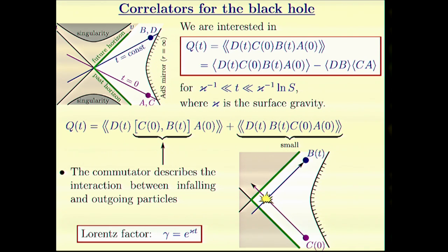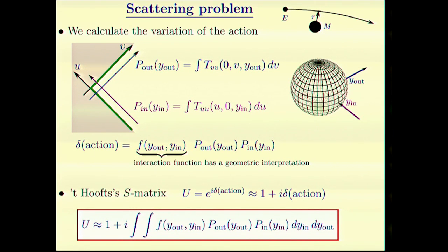We're thinking about the response function for B of t responding to C of zero. This response is interpreted as crossing paths between some infalling particle and some outgoing particle that collide at very high Lorentz factor, very high Lorentz boost, which grows exponentially in time.